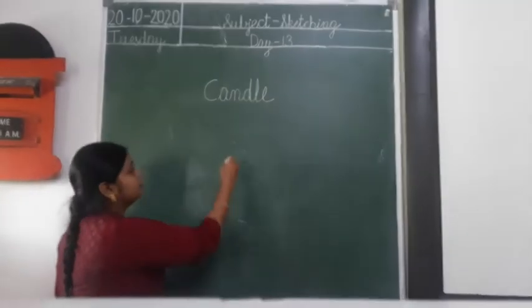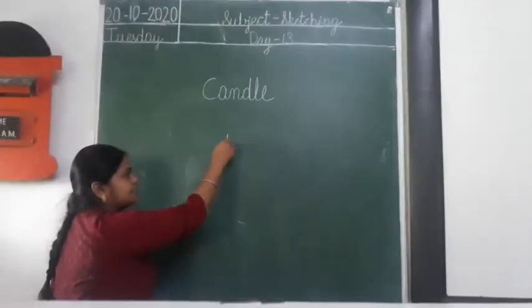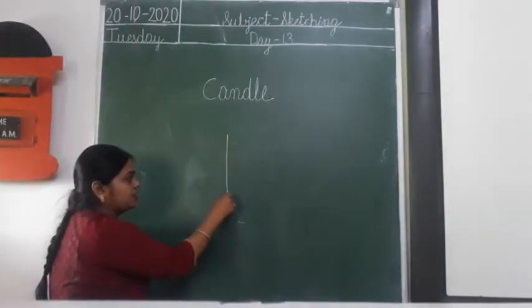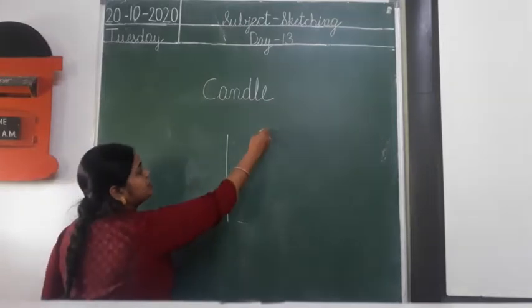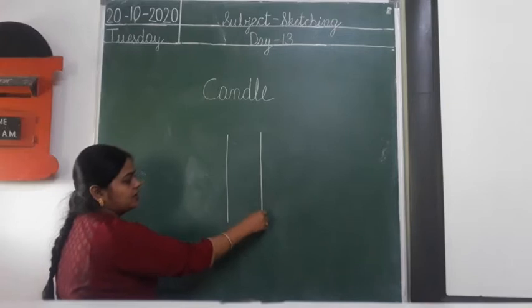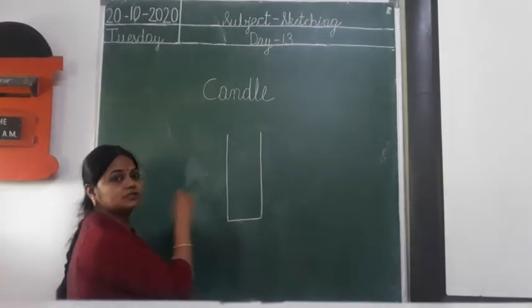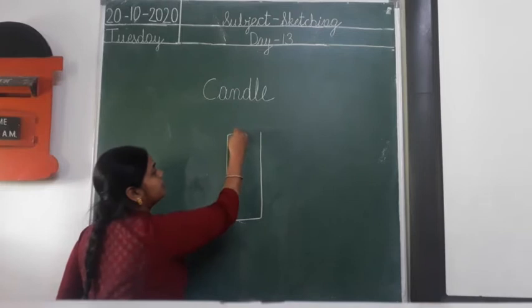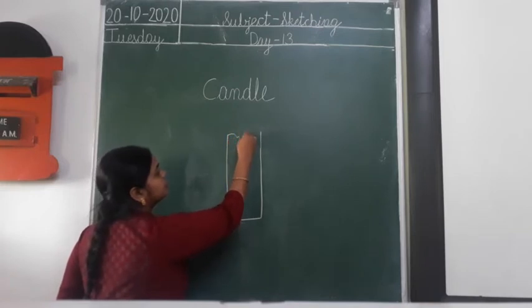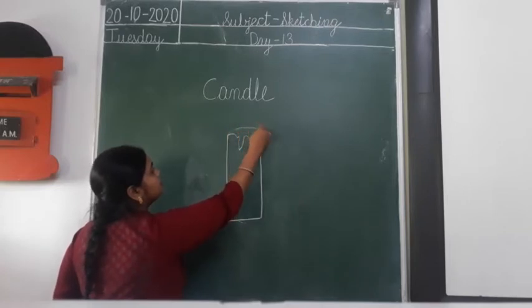Okay, look carefully. First you have to draw a standing line, this way. And then there also you have to draw a standing line, and you can draw it like this. And then you will do it — you can ask your parents.